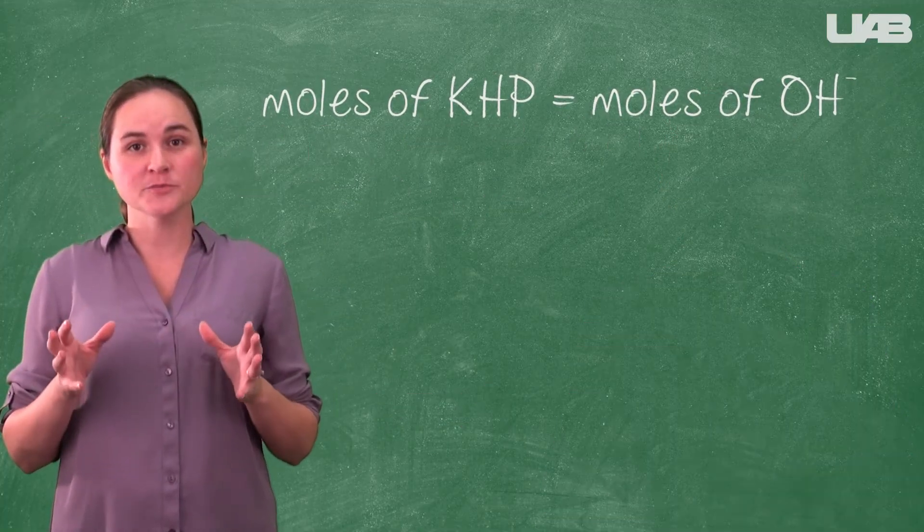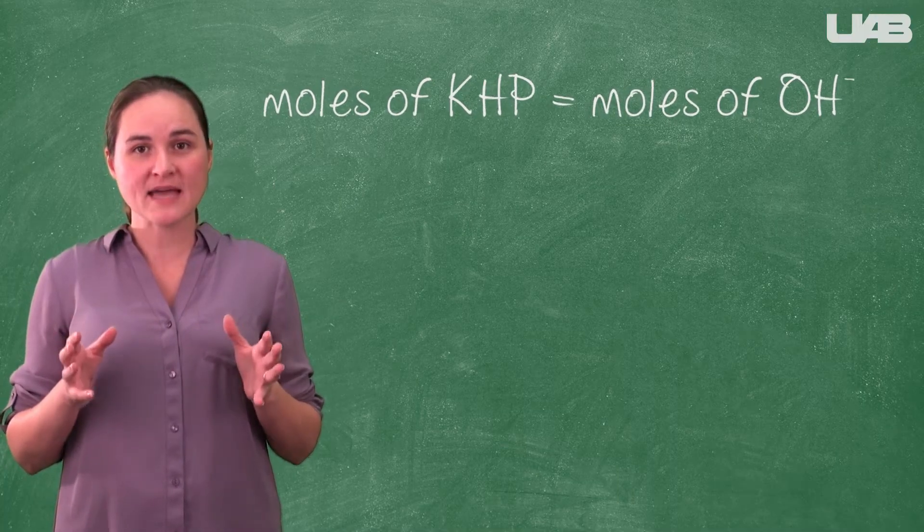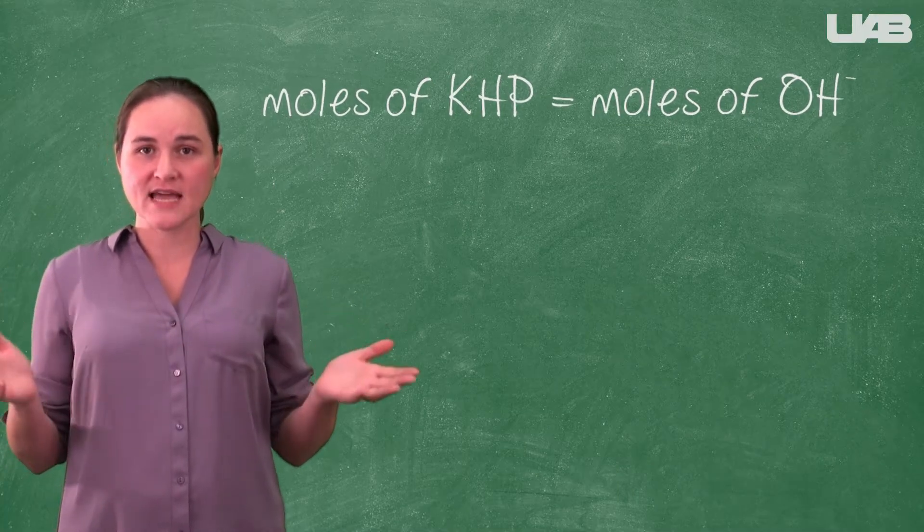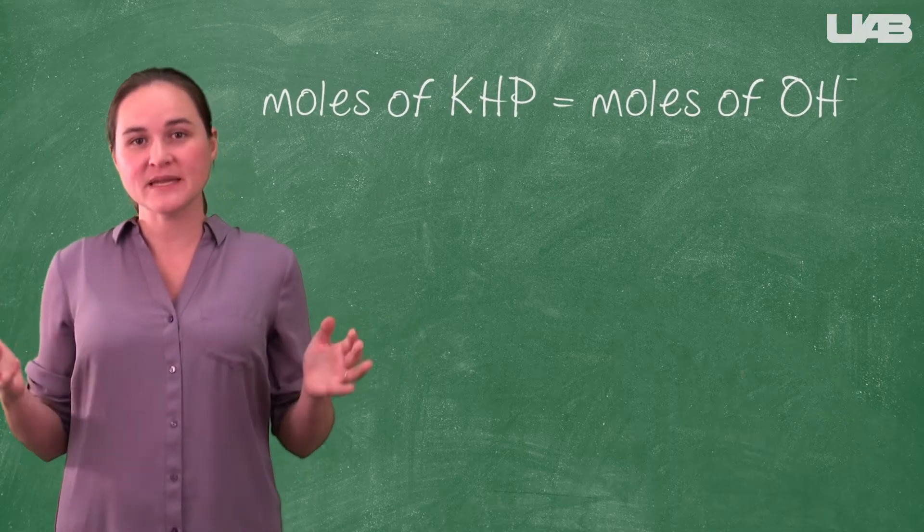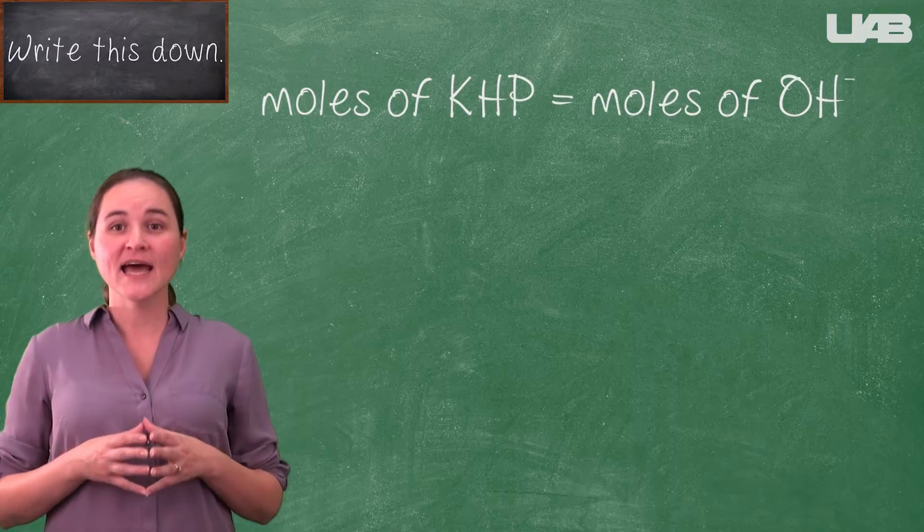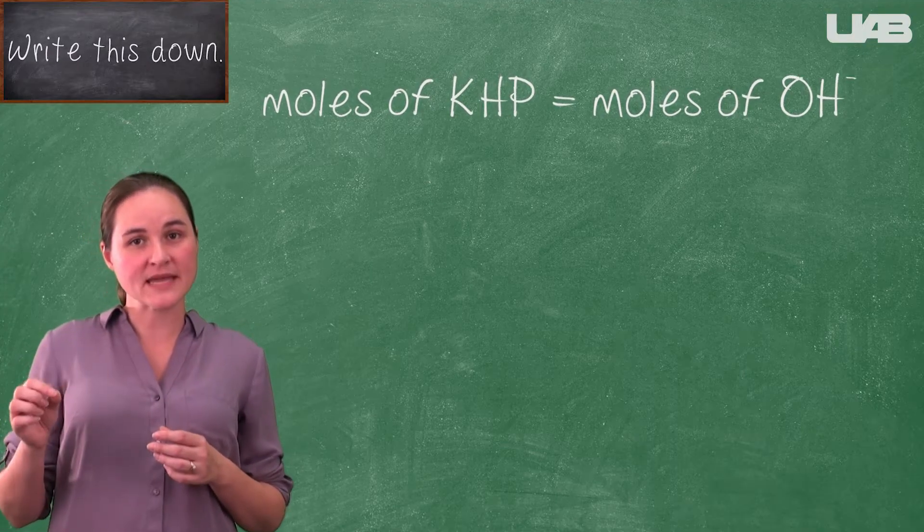The KHP is a solid at room temperature, so we will determine the mass of the KHP to determine the moles of acid, dissolve it in a small amount of water, and then add the base solution until the indicator changes.